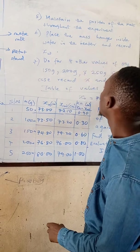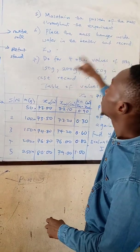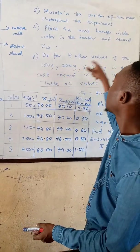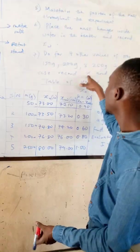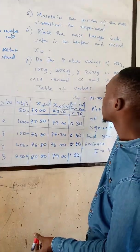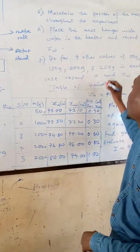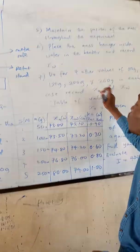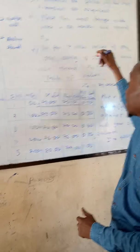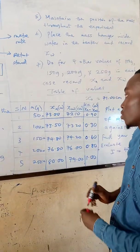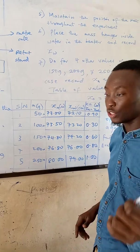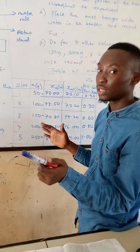Place the mass hanger inside the water beaker and record XW. Do for four other values of 100 grams, 150 grams, 200 grams, 250 grams. In each case, record the value for my XA, that is the weight in air, the distance in air and the distance in water. So after that, let's go and check how we are going to do this practically.